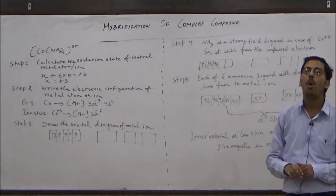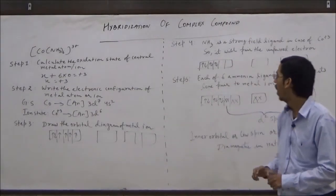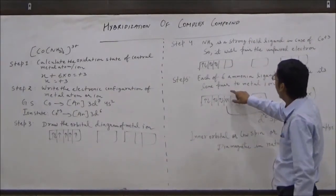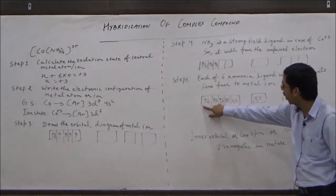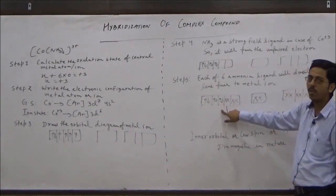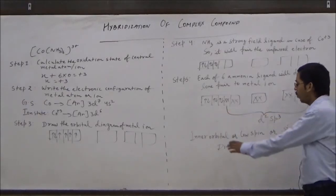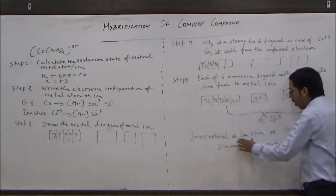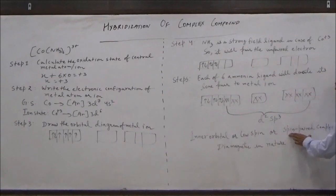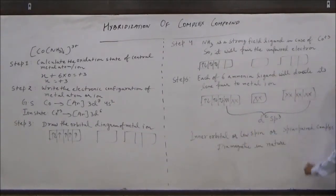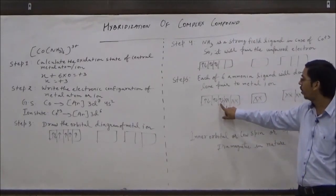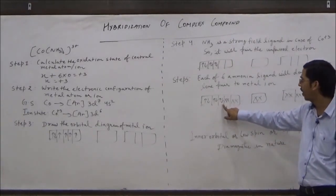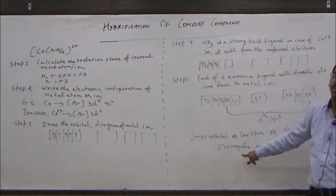The hybridization is d²sp³ and its geometry is octahedral. Since all the electrons in the complex ion are paired — not a single unpaired electron is present — it is also known as an inner orbital, low spin, or spin-paired complex. These terms all refer to the same thing. Since not a single electron is unpaired in this complex ion, its magnetic nature is diamagnetic.